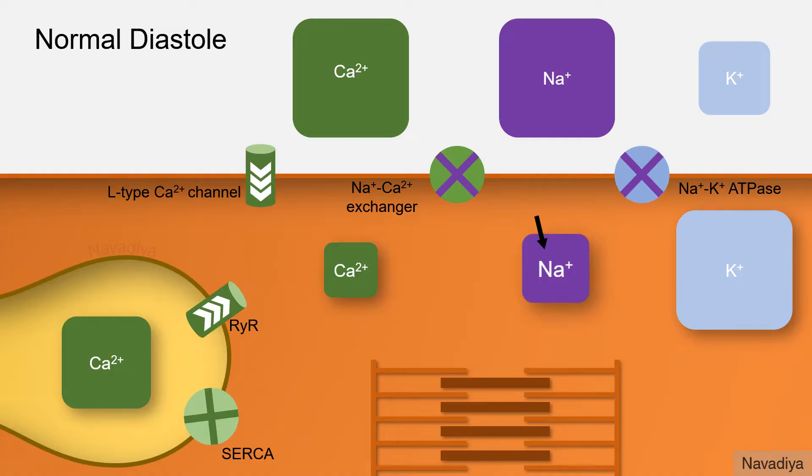The sodium that enters in tends to increase intracellular sodium concentration. But continuous efflux of sodium by sodium potassium ATPase pump keeps intracellular sodium concentration low. So this is the normal cycle.